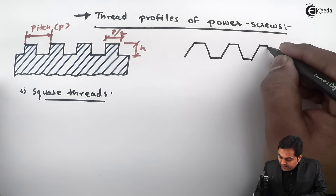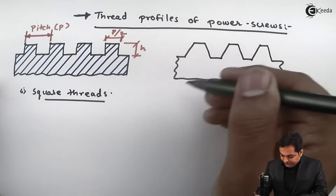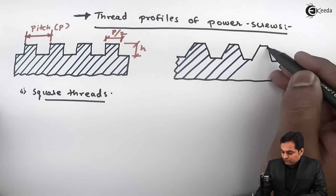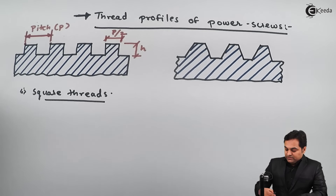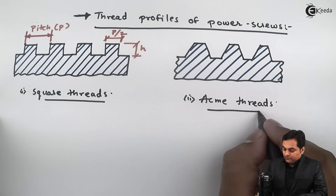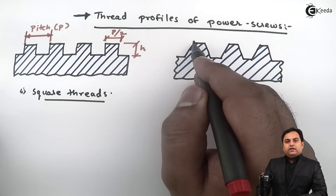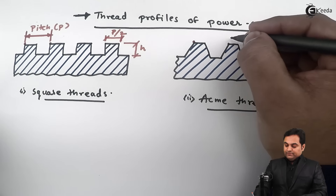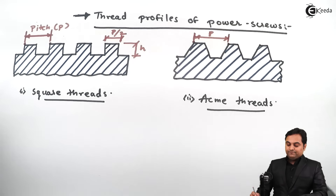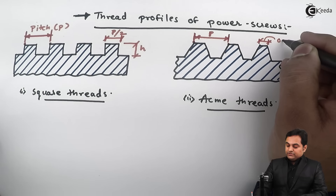The second most commonly used profile is ACME threads. Drawing the profile, this is the cut section for ACME threads. Again, the pitch is measured by taking a point on a thread and finding the same point on the next thread — this distance is the pitch, denoted by small p, and it remains the same throughout. The top surface of the thread in case of ACME threads is taken as 0.37 times the pitch.